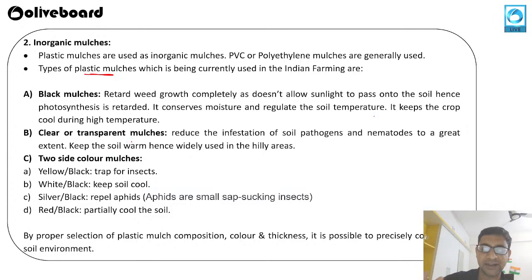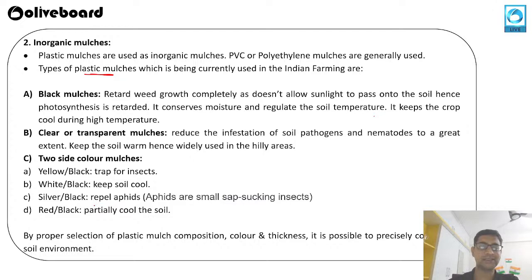The third type is two-sided colored mulch, with different colors on each side: yellow-black to trap insects, white-and-black to keep the soil cool, silver-or-black to repel aphids (small sucking insects), and red-or-black for partially cooling the soil. By proper selection of plastic mulch composition, color, and thickness, it is possible to precisely control the soil environment.